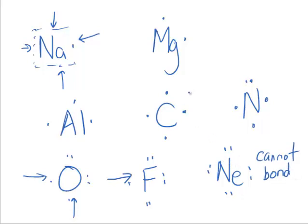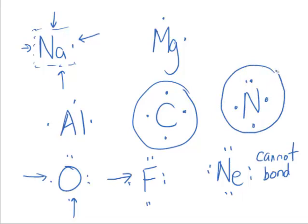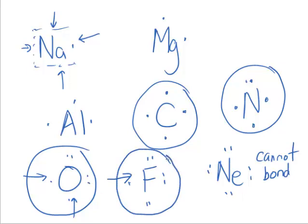So, carbon can bond four times because it has four unpaired electrons. Nitrogen can bond three times because it has three unpaired electrons. Oxygen can bind two times because it has two unpaired electrons. And F can only bond once because it has one unpaired electron.